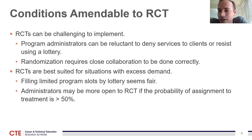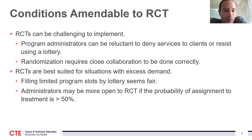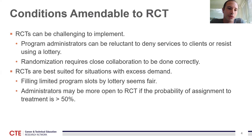RCTs are best suited for situations where a program has excess demand. In that scenario, using a lottery to allocate limited program spots appeals to a sense of fairness, which is often why many school districts or programs utilize a lottery process in the first place. Program administrators may also be more open to implementing an RCT if the probability of assignment to treatment is greater than 50%. The downside of setting a higher treatment probability is that it reduces statistical power, so you need more students in the sample to compensate.